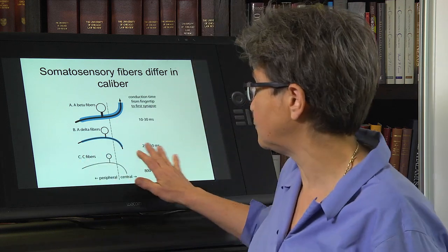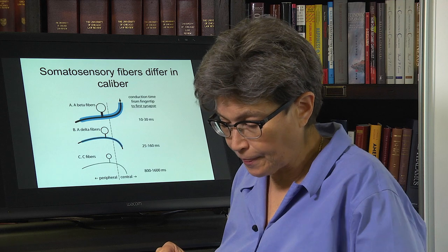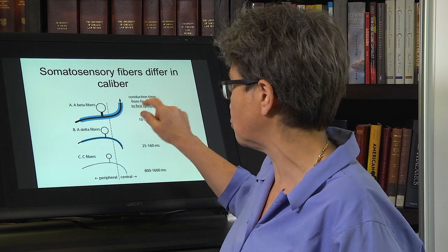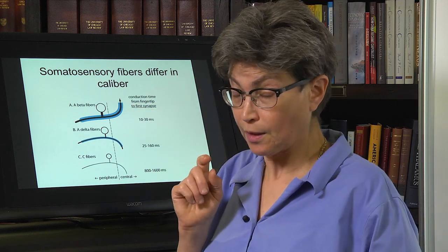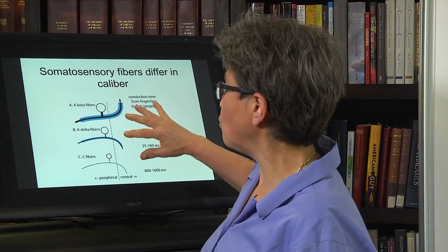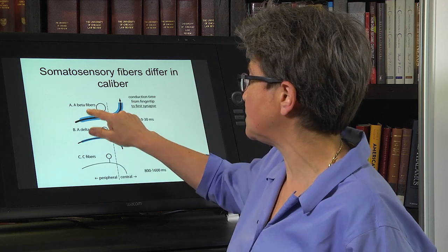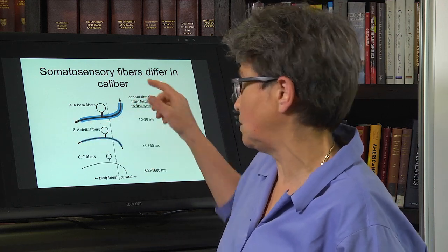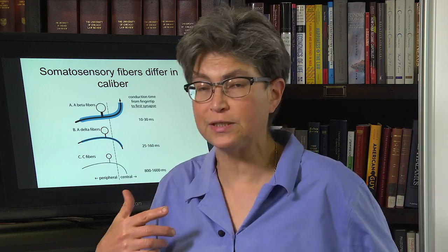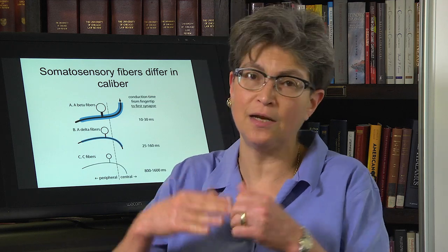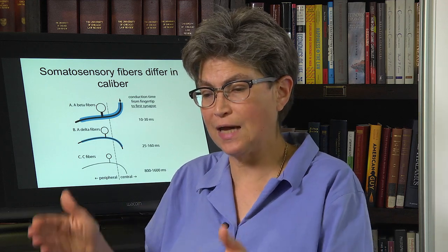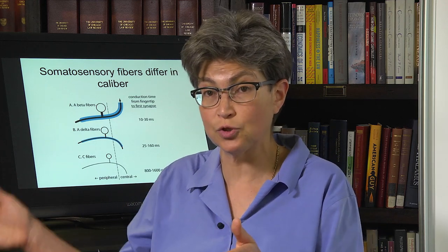There are in fact a lot of touch fibers that travel in C-fibers, but most of them are not involved in motor control — motor control-involved fibers are the A-beta fibers. Within these different fiber types, there are subtypes: a type of fiber that only detects vibration, a type that only detects touch but rapidly adapts, and another that only detects touch but slowly adapts.